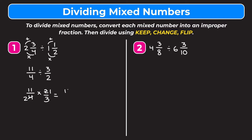Now we multiply straight across: eleven times one is eleven on top, two times three is six on the bottom, giving us eleven-sixths. Writing this as a mixed number: six goes into eleven one time with five left over, keeping the denominator, so we get one and five-sixths.